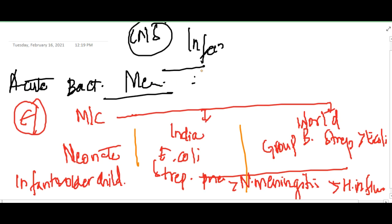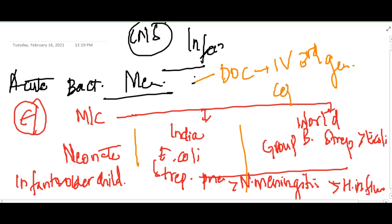Any child suffering from acute bacterial meningitis presents with irritability, shrill cry, seizures, and tense bulging anterior fontanelle. The drug of choice is IV third-generation cephalosporins.